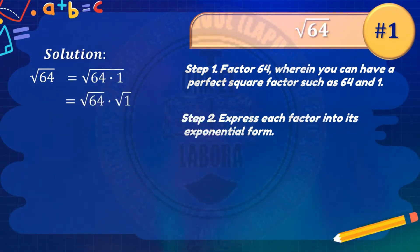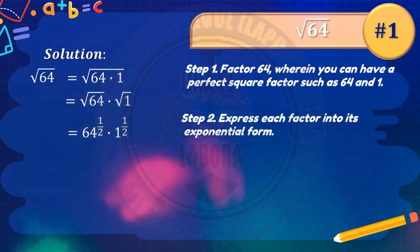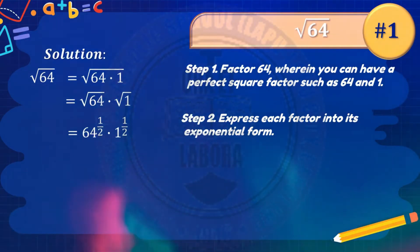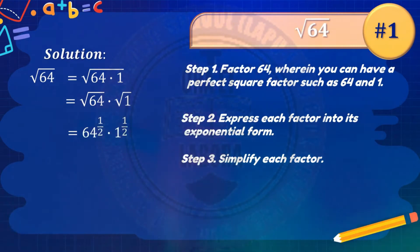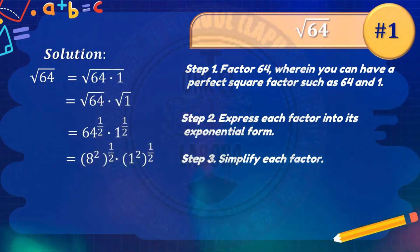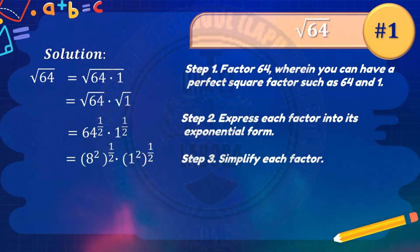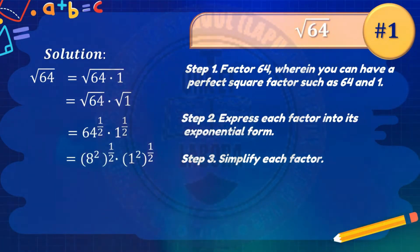The exponential form of square root of 64 is 64 raised to one half, and for the square root of 1, that's 1 raised to one half. So we have 64 raised to one half times 1 raised to one half. Step 3: simplify each factor. Express 64 as 8 squared and 1 as 1 squared, giving quantity 8 squared raised to 1 half times 1 squared raised to 1 half.